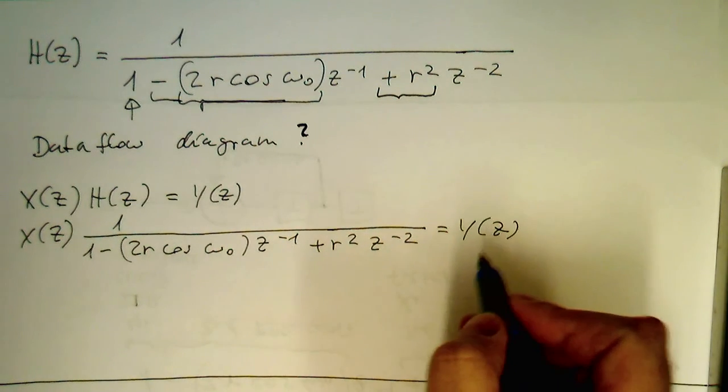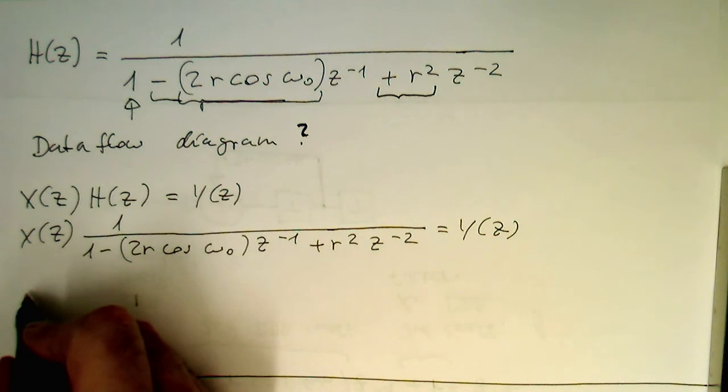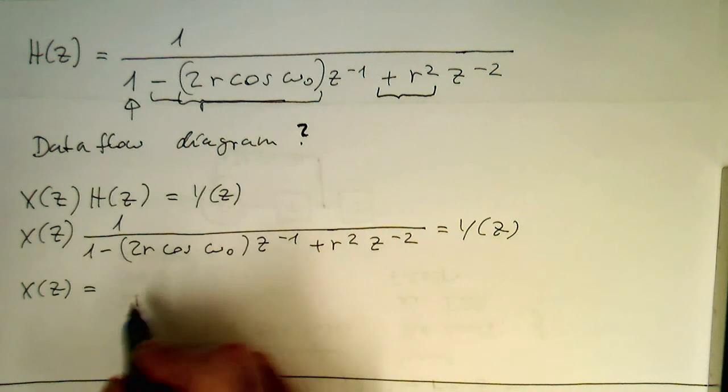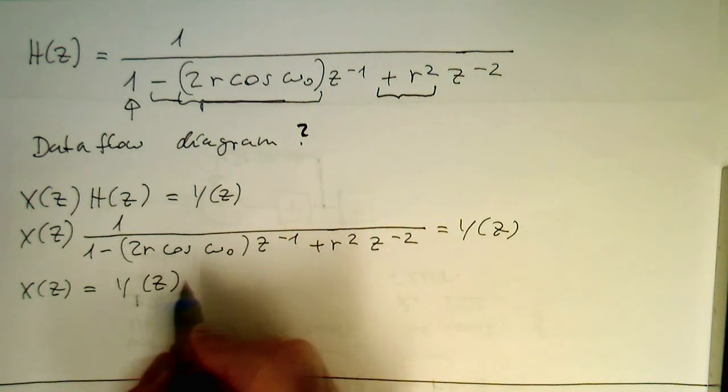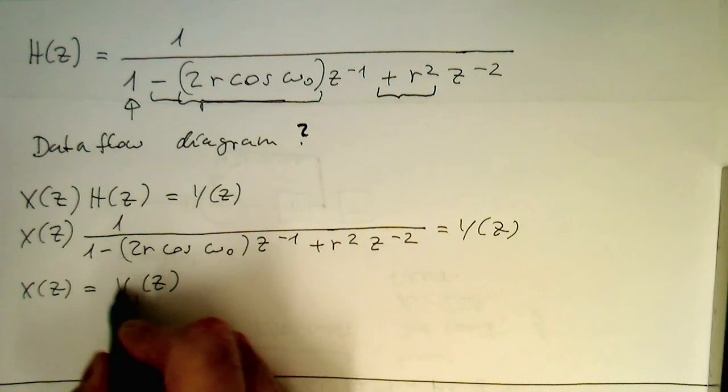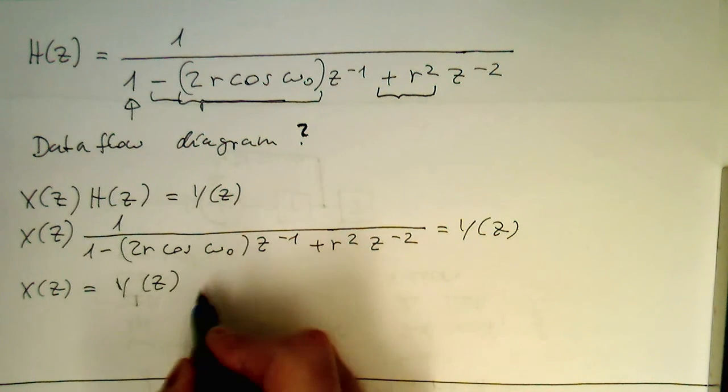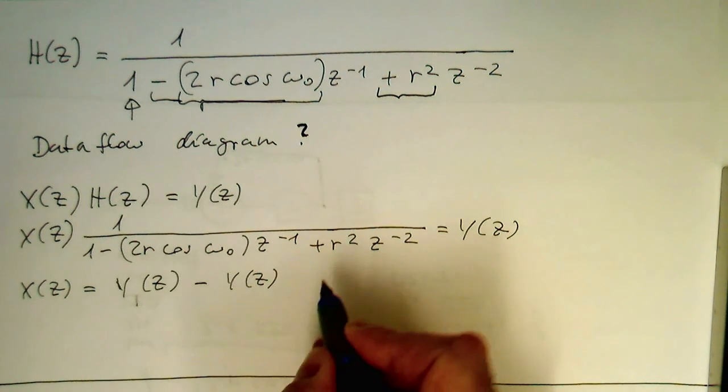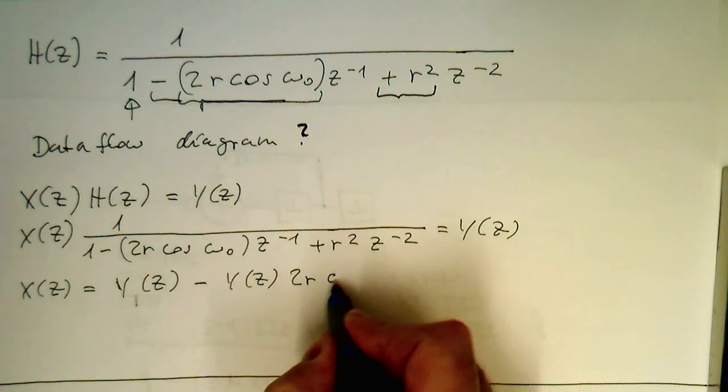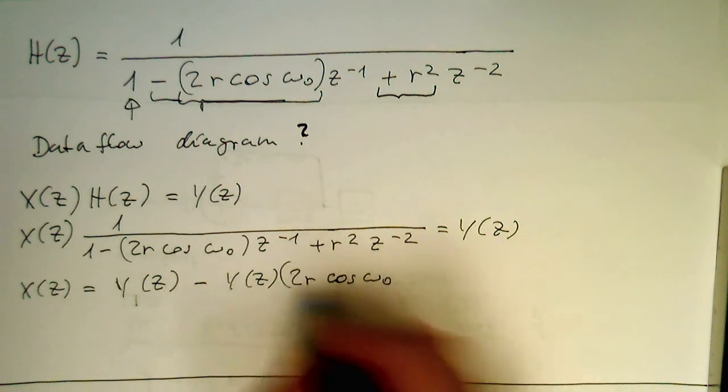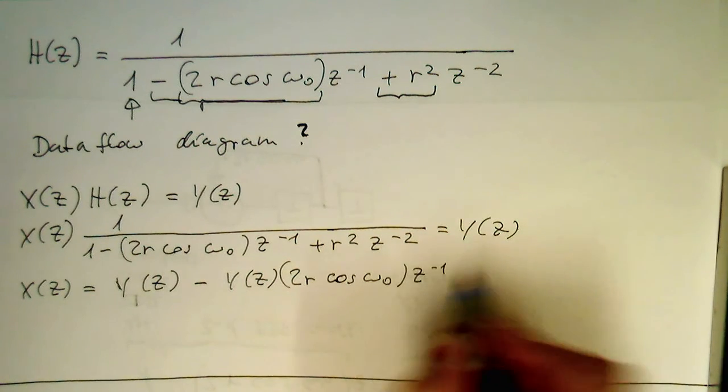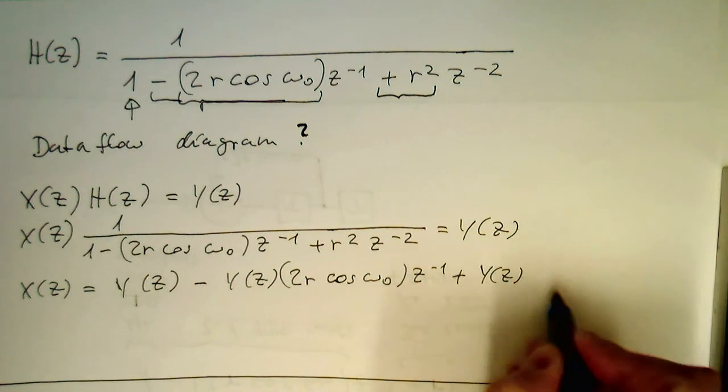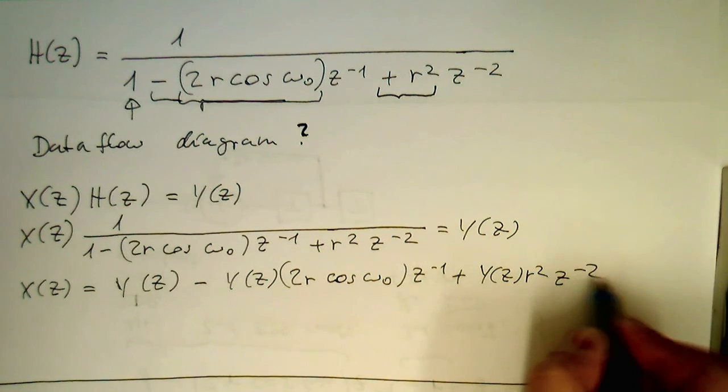Now we know in order to solve this, we just multiply the whole thing to the other side. So we're getting x of z is equal to y of z, and then multiply this here minus by y of z 2r cosine omega 0, that's our factor z to minus 1, and then plus y of z r square z to minus 2.